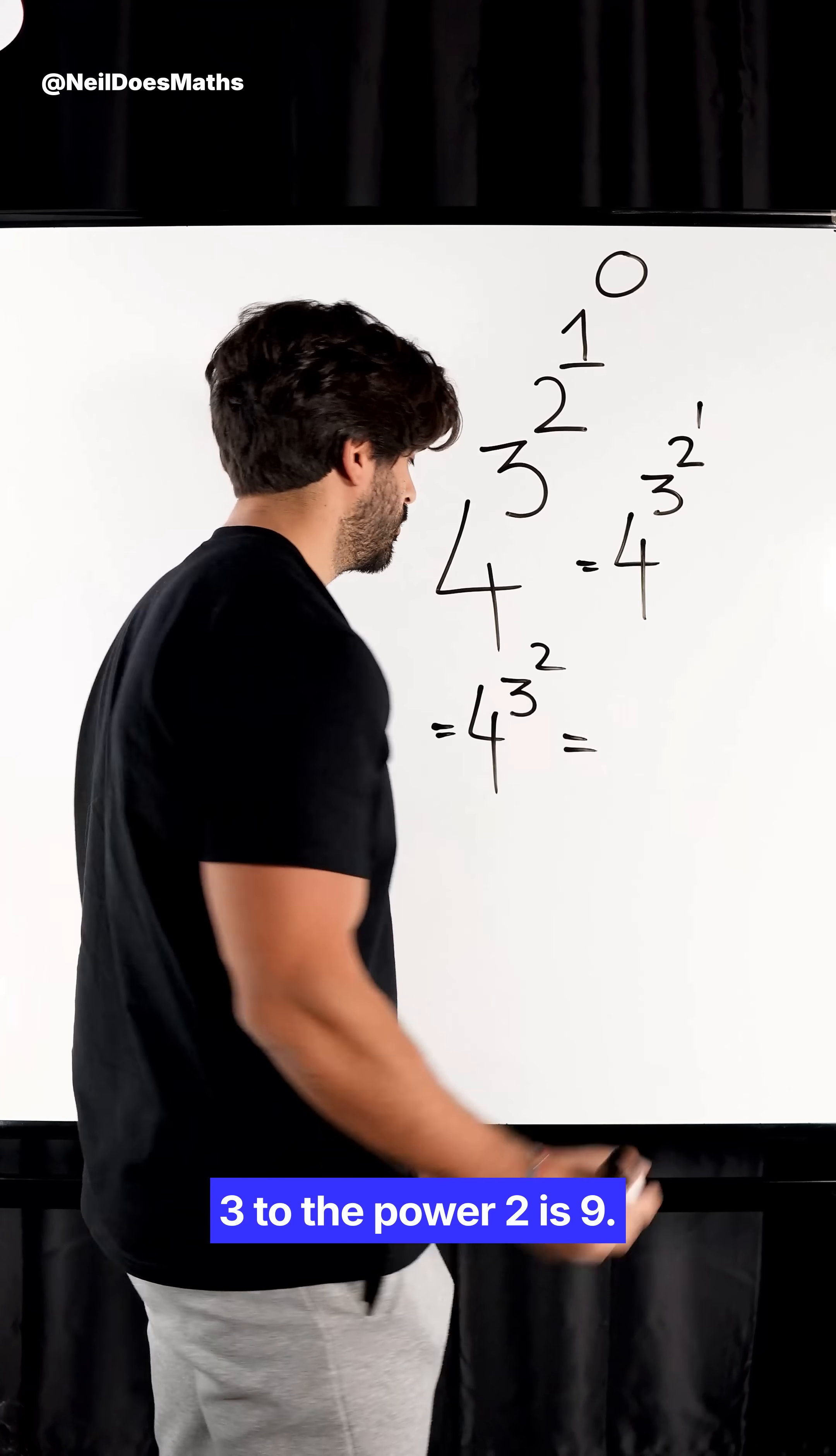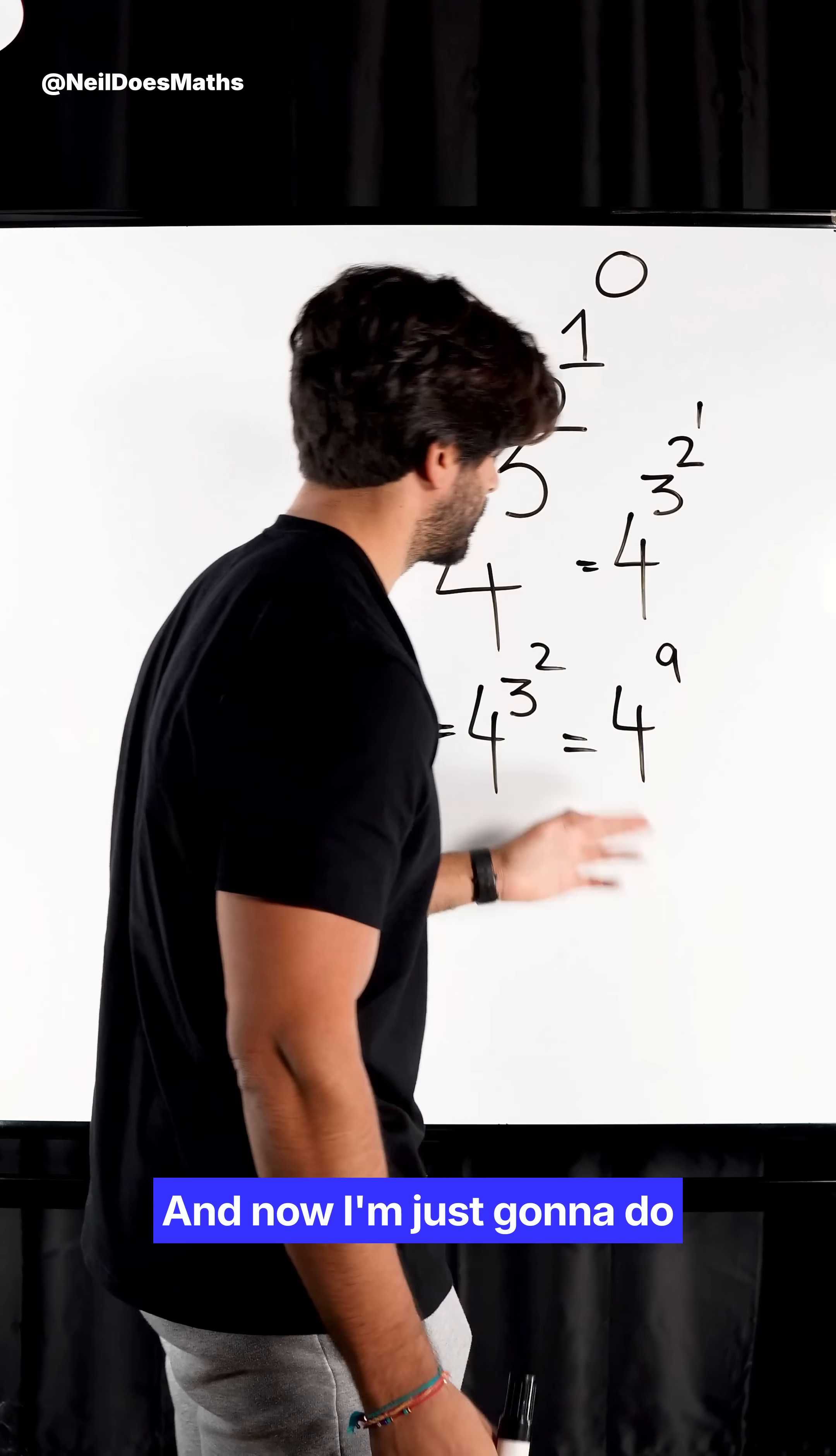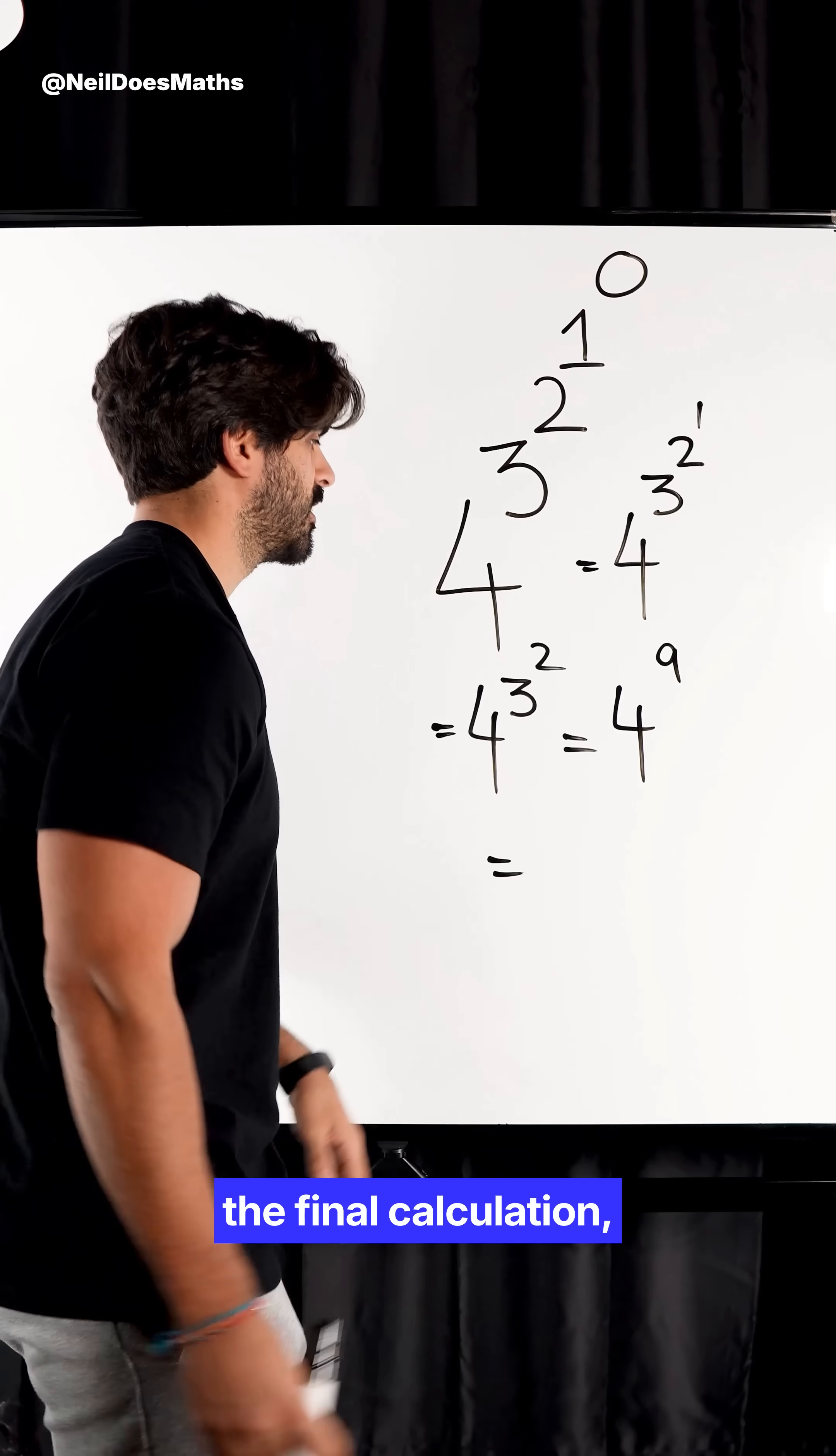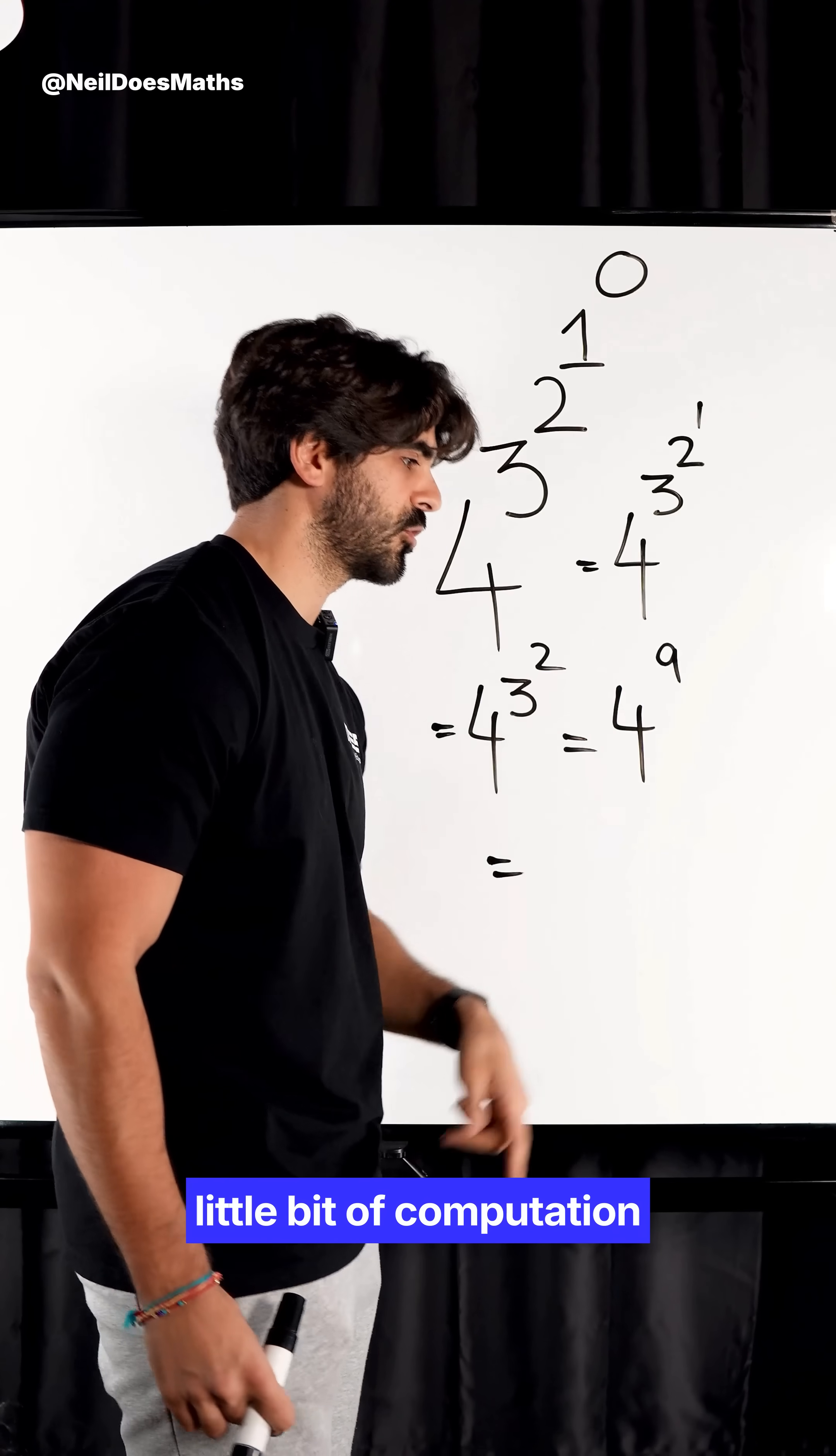Three to the power of two is nine. Three times three is nine. And now, I'm just going to do the final calculation, which is four to the power of nine, which I can easily do in my head with a little bit of computation.